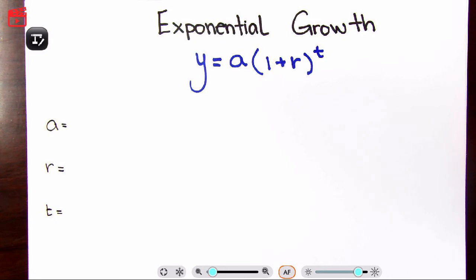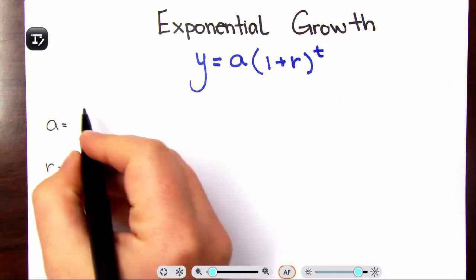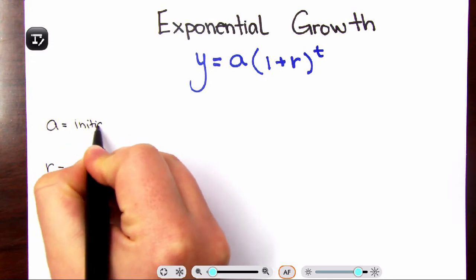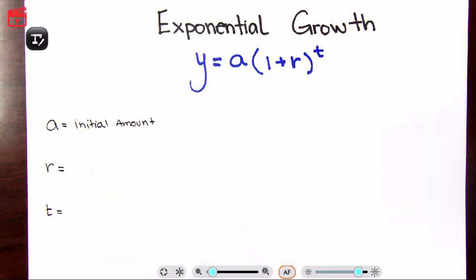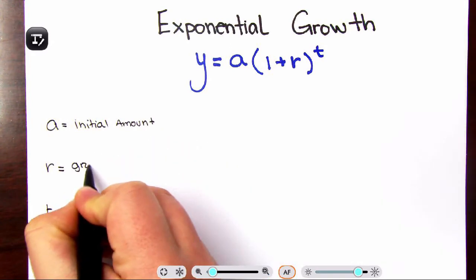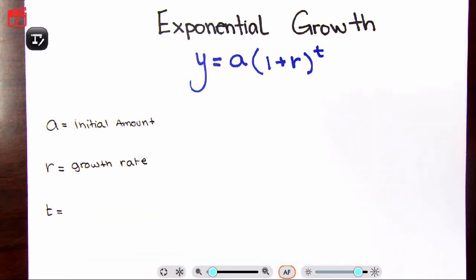So exponential growth, here's your formula, is very similar to geometric sequences. Your a, think of it as your a sub one, is your initial amount. Your R is your growth rate, and T is your time in years.